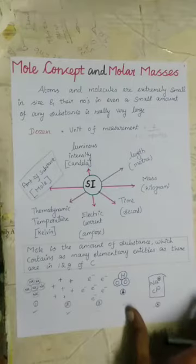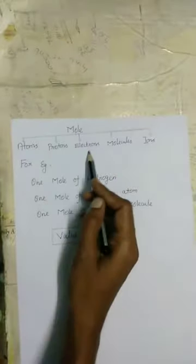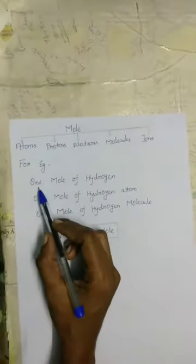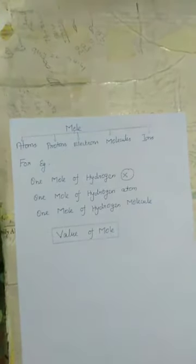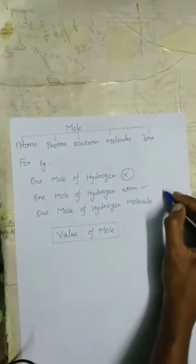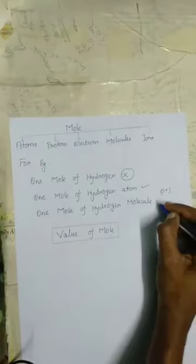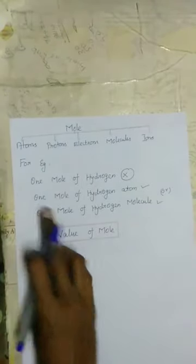The term mole is used to count particles such as atoms, protons, electrons, molecules, and ions. We must indicate the nature of the particles under observation. For example, '1 mole of hydrogen' — is it correct? No, it is incorrect. We need to specify the entity, that is, hydrogen atom or hydrogen molecule. Thus, the correct terms would be '1 mole of hydrogen atom' or '1 mole of hydrogen molecules.'